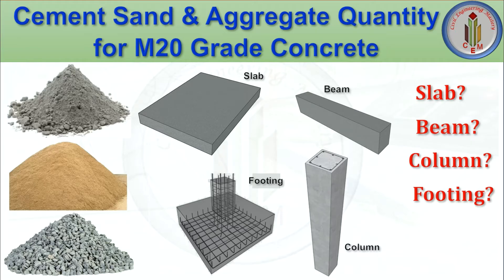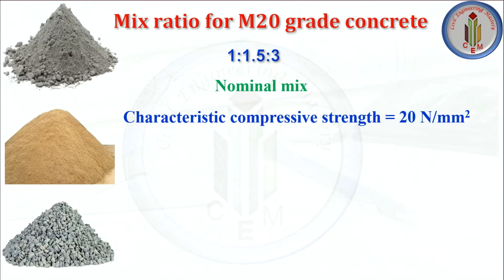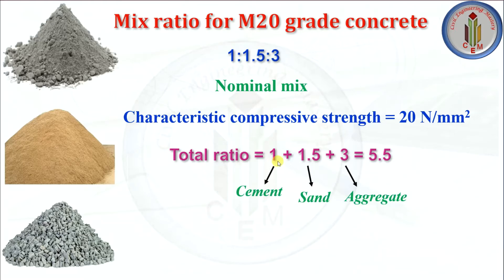By the end of this video, you will be able to calculate cement, sand and aggregate quantity for M20 grade of concrete for all structural members — slab, beam, column and footing. So without delay, let's begin. First, let's see the mix ratio for M20 grade of concrete. Mix ratio is 1:1.5:3. It is a nominal mix, not a design mix. The total ratio is 1 plus 1.5 plus 3, which is 5.5 — 1 part cement, 1.5 part sand and 3 part aggregate.